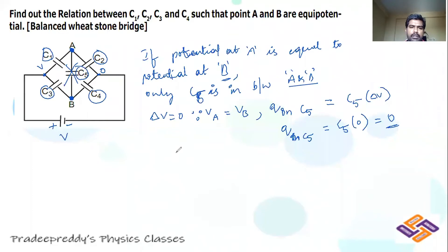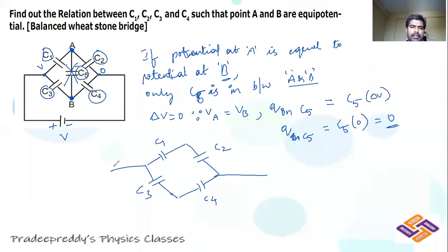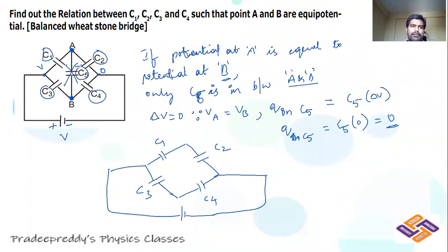We can redraw the circuit in a simpler form. This is C1, this is C2, this is C3, and this is C4. This end is connected to the positive of the battery and this end to the negative. We are eliminating C5 because the potential difference across C5 is zero, therefore charge distribution will be zero — no charge flows into C5.